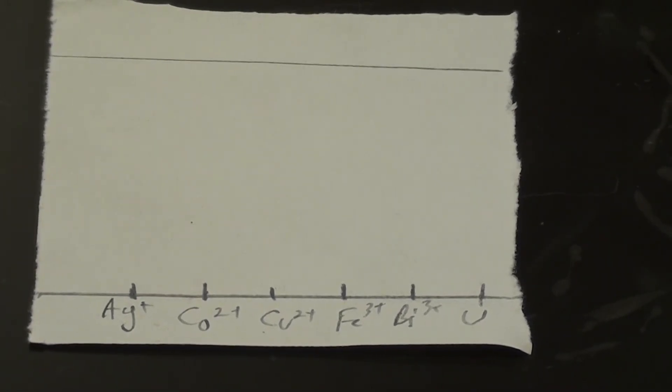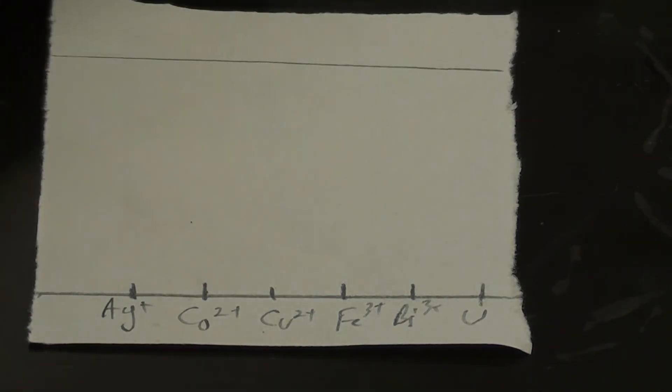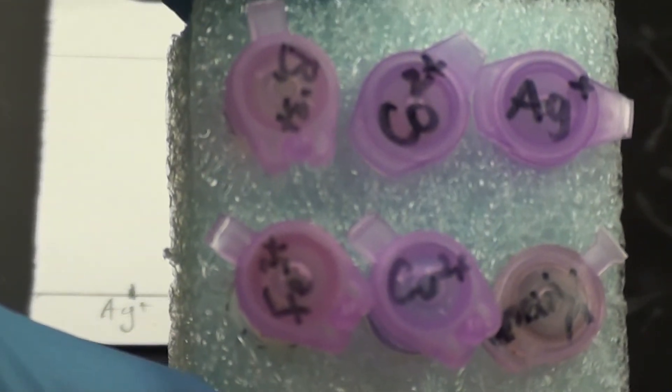So what I'm going to show you now is how to spot a TLC plate or TLC chromatography paper. Now what I've got here are samples, and these samples are in these micro test tubes here.